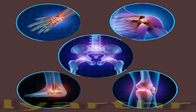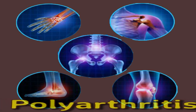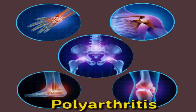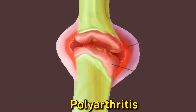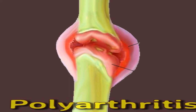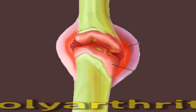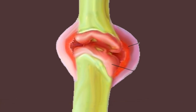Polyarthritis: causes and symptoms. Polyarthritis is present when four or more joints in the body become painful and inflamed. The condition is also known as polyarthralgia, which means many joint pains. The name polyarthritis comes from two Greek words: poly means many or much, and arthron means joint. In this video, we look at some of the different forms of polyarthritis, along with the symptoms that can occur and what can be done to treat them.